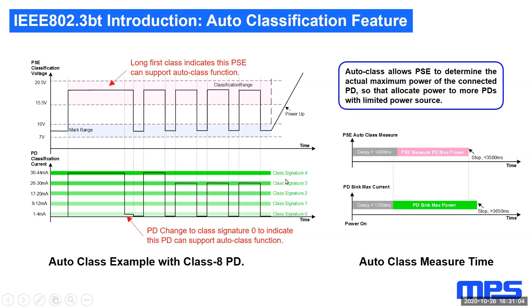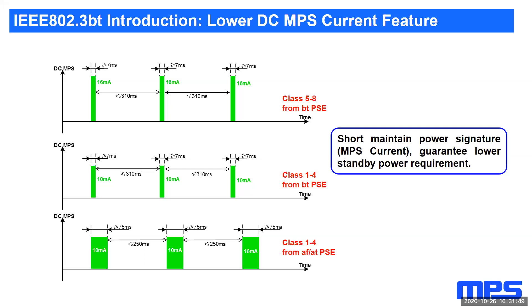The PD power in 802.3BT is more adaptive. This is different from 802.3AF and AT, where power is defined and fixed by the class level. The two waveforms on this slide show the PSE classification voltage waveforms and the different signature current levels generated by the PD. The long first-class PSE voltage pulse and the PD signature current going to zero indicate the auto classification function. 802.3BT also requires a lower minimum DC current during standby mode, which reduces standby consumption. As shown in the top waveform, the duty cycle for the current is much smaller.